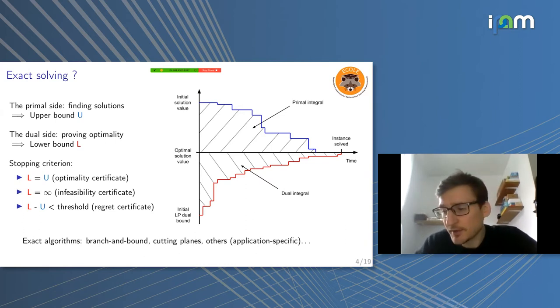But exact solving, sometimes you don't even need to find the optimal solution. You may want to stop when you reach a certain threshold, which I call a regret certificate. If I give you a solution to your problem, and I guarantee you that you cannot improve over the solution for more than one percent, then you know that you have little regrets. If you go for this solution, maybe you could get one percent more, but no more than that. So it's also a very good thing to have. This is what I mean by exact solving.